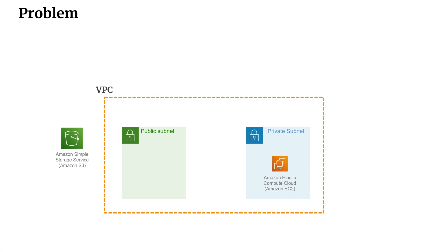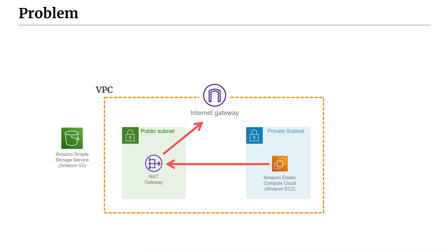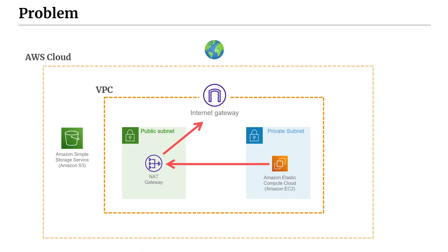What folks would typically do to make this work — using a naive approach without VPC endpoints — is first create a NAT gateway. NAT stands for network address translation. Then we'd have our internet gateway, which is a default component that comes with our VPC. Once we have these three components set up and wired together, our EC2 instance's traffic would flow through the NAT gateway, onto the internet gateway, and be forwarded out to the public internet. The key point is that the traffic exits the AWS cloud, so traffic destined for S3 would leave the AWS cloud into the public internet before finally reaching Amazon S3.